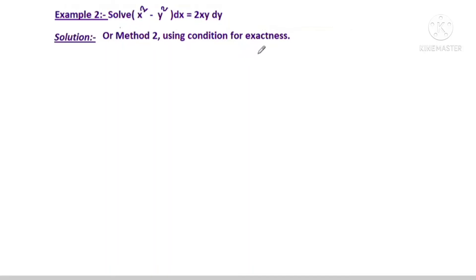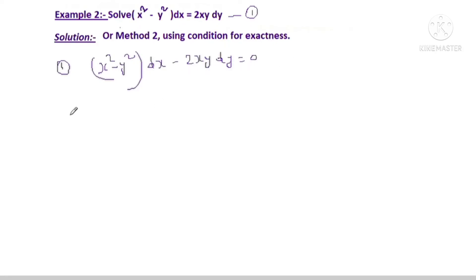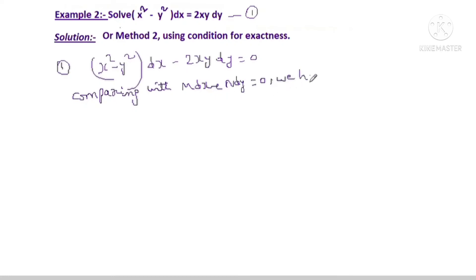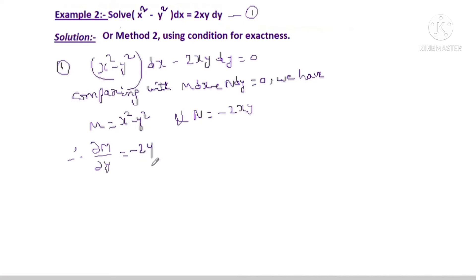Now let us solve using Method 2, that is using the condition for exactness. Let us call this equation 1 and rewrite it in the standard form M dx + N dy = 0. So we write: (x² - y²) dx - 2xy dy = 0. Comparing with M dx + N dy = 0, we have M = x² - y² and N = -2xy.